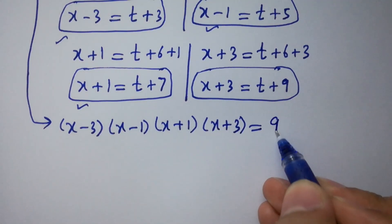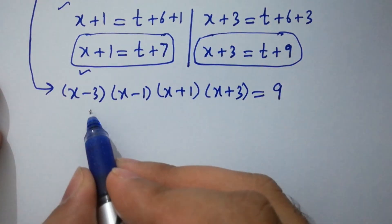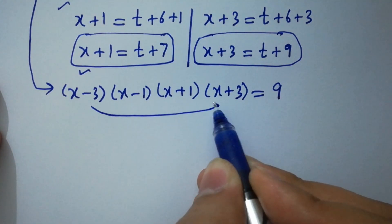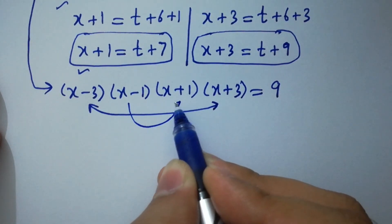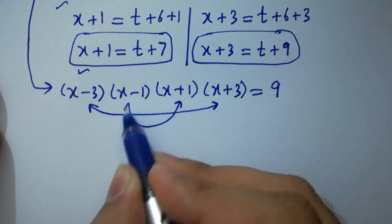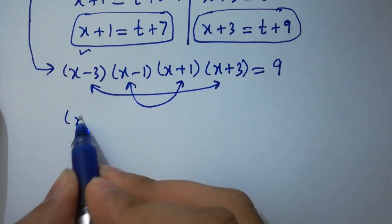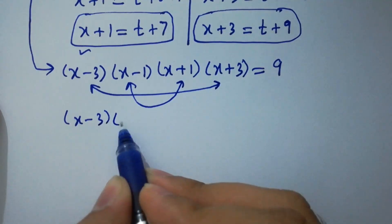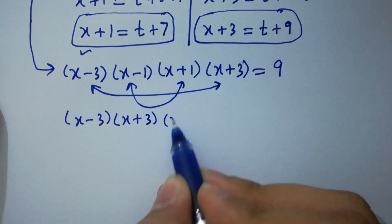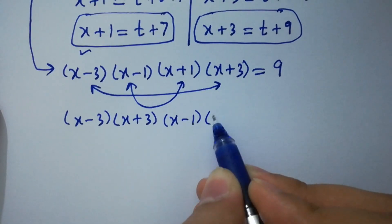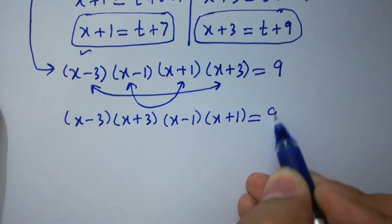I hope you understood. By pairing corresponding terms, we have (x-3)(x+3) and (x-1)(x+1), so we can write it as (x-3)(x+3) · (x-1)(x+1) = 9.